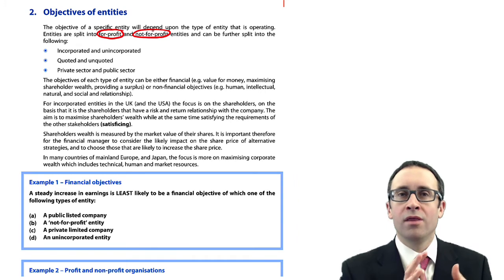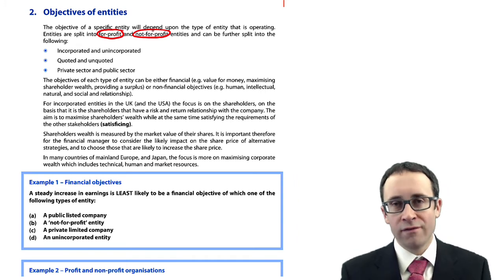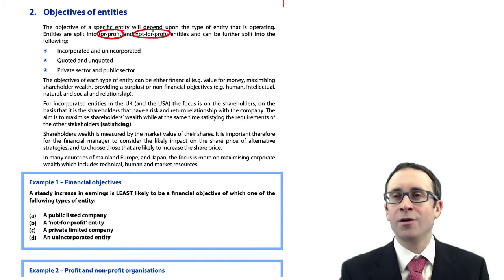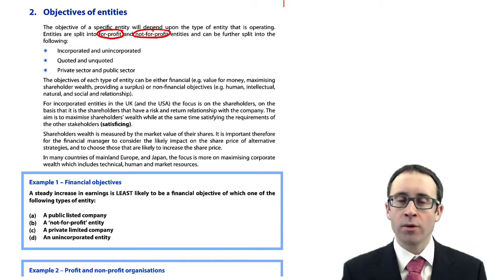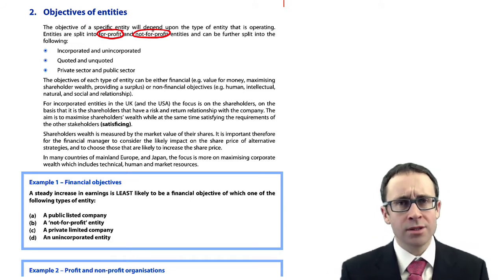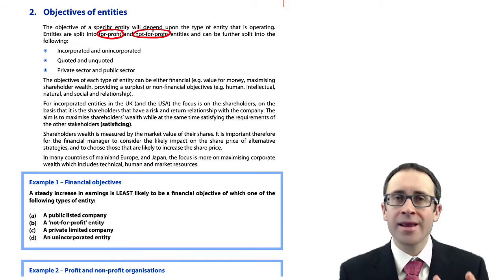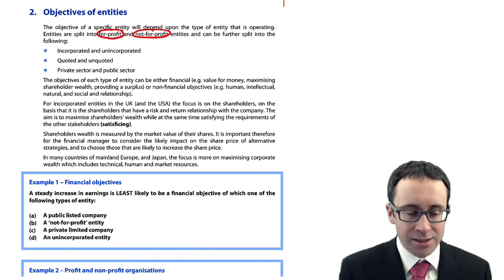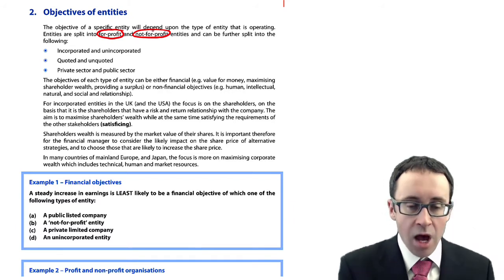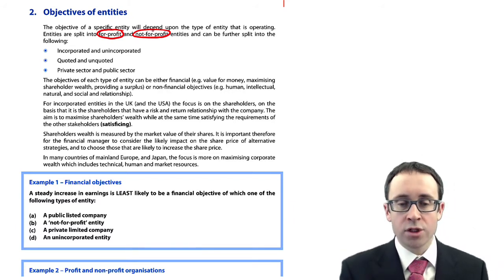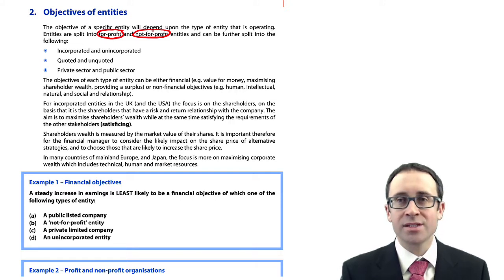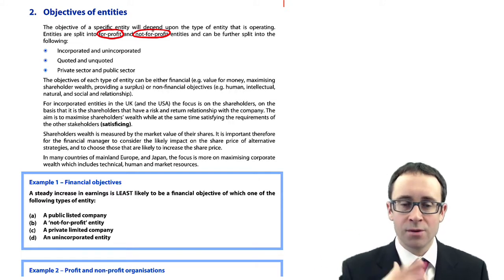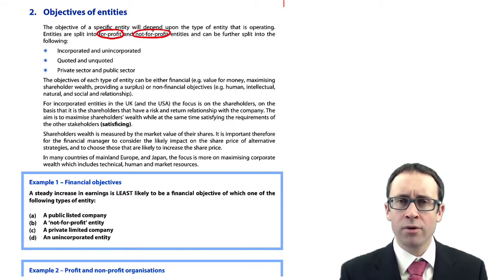When looking at the financial and non-financial objectives, there's a little more leeway for unquoted companies than if you are quoted. But for both, the main aim is thinking about being profitable. We then touch upon private sector and public sector. Private sector is owned by shareholders with a view to making profit.